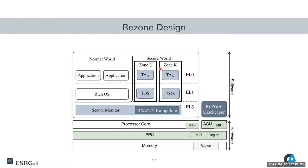I now hand it over to David, who will explain the design, implementation, and evaluation. Looking at the ReZone design, the first thing to consider is that ReZone requires the possibility to establish at least two security domains: one for the ACU and one for the processor core. This allows us to establish different access control properties for each. We must also include custom functionality in the secure monitor, which we call the ReZone Trampoline, whose main responsibility is to securely handle entries and exits to and from zones.